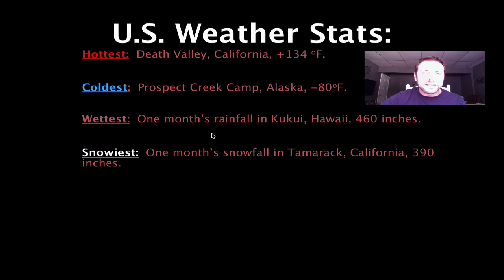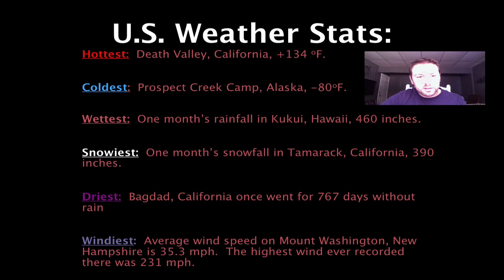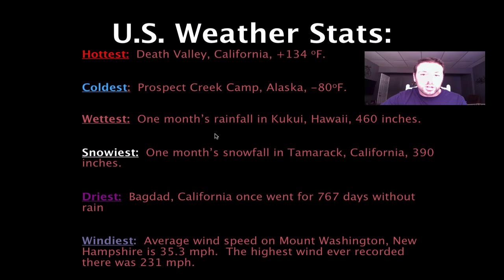The snowiest is in California with 390 inches of snow in a month. The driest is in Bagdad, California — another California place — with 767 days without rain. The windiest is Mount Washington, New Hampshire, just a little north of us, with the highest winds recorded at 231 miles per hour. Those are well over hurricane force winds, similar to what we typically see in tornadoes. Within the United States there are a huge number of extremes — coldest, hottest, snowiest, driest, and windiest. It's actually pretty amazing.